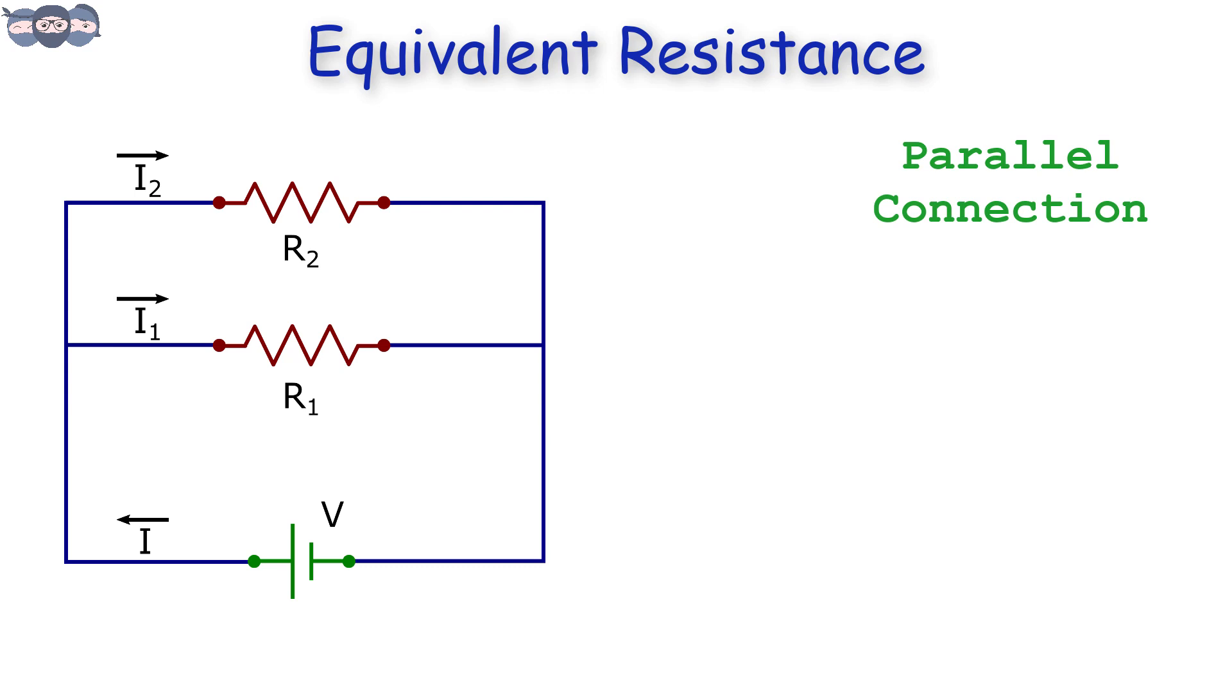In the parallel combination, the voltage applied across the terminals of resistors remain same. However, current through the resistors change.